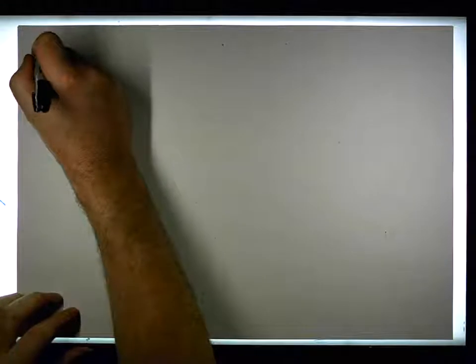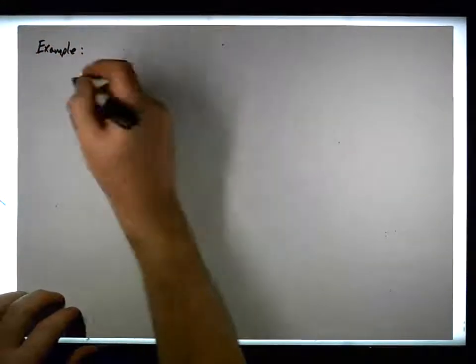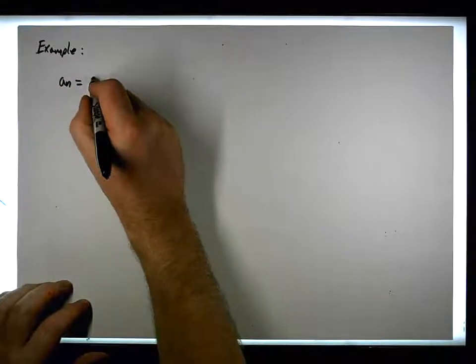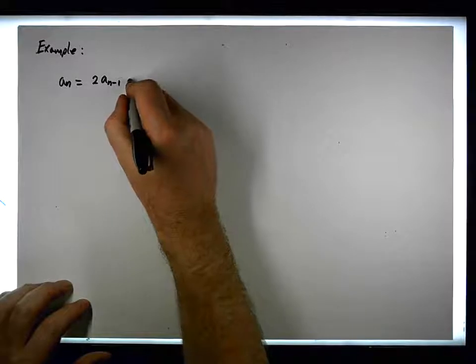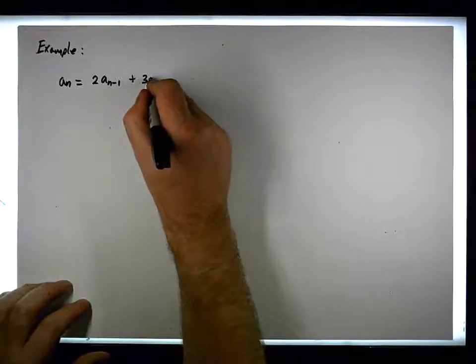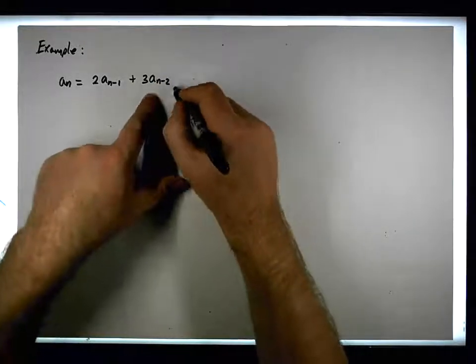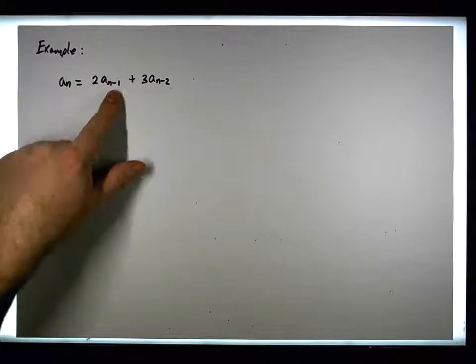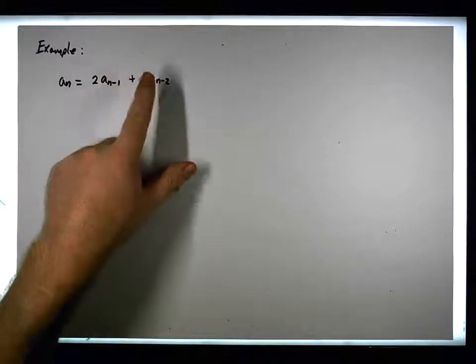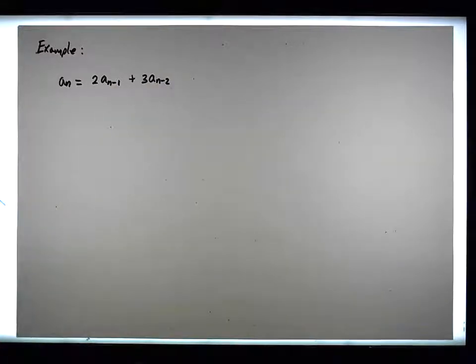Let's say here's another example. So what we might have is something like this: aₙ is equal to twice aₙ₋₁ plus three times aₙ₋₂. To get the nth term, we need the term before it and the term that precedes that. So we need two terms.